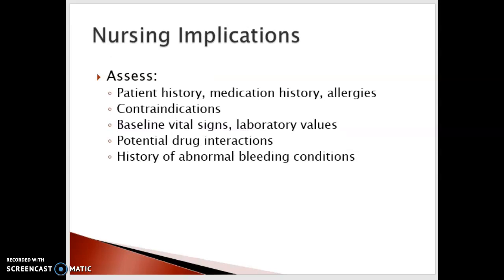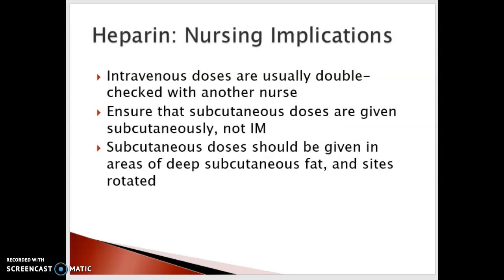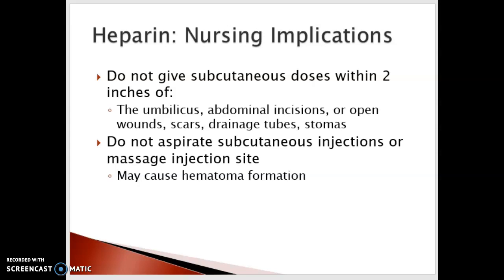For nursing implications: assess your patient's history, review all medications they take, check for any contraindications, obtain baseline vital signs, and check lab values — PT, PTT, and INR. Check potential drug interactions and any history of abnormal bleeding. For heparin, intravenous doses are usually double-checked by another nurse. Ensure subcutaneous doses are given subcutaneously — not intramuscularly — in deep subcutaneous fat, with sites rotated. Do not massage sites. Don't give subcutaneous doses within two inches of the umbilicus, any abdominal incisions, open wounds, scars, drainage tubes, or stomas, and do not aspirate, as that can cause hematoma.